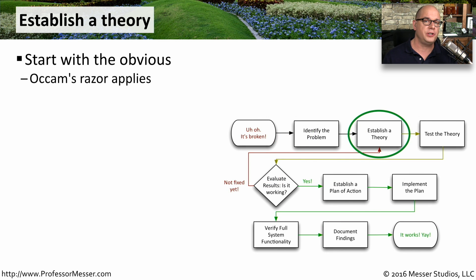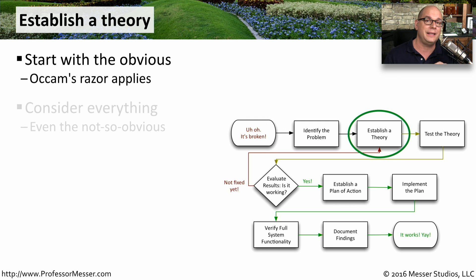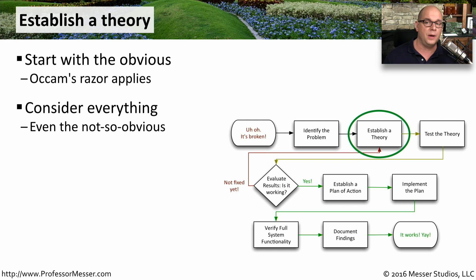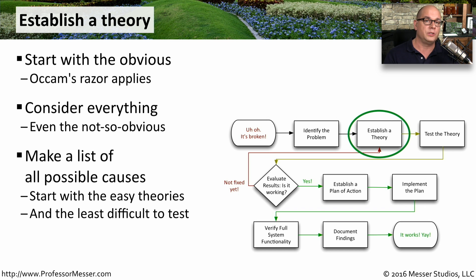Now that we've collected information, we need to start thinking about what might have caused this problem. We can start with the most obvious issues. The simplest explanation is often the most likely, but that doesn't mean it's the only possible thing that might be happening. You need to consider every possible scenario, even the ones that might not be completely obvious. It's useful to make a list of what all of the possible problems might be, and then you can start with the easy theories to see if those might be able to resolve the problem quickly.